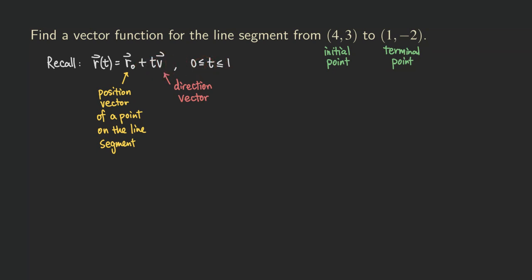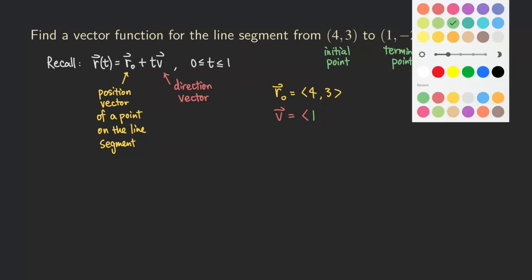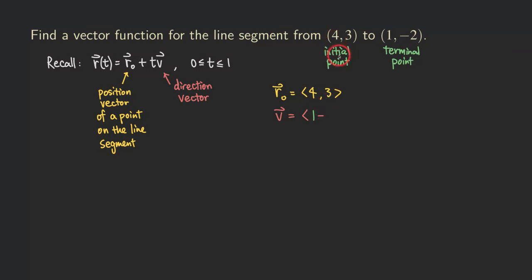Now let's start constructing this function. First, we write down the position vector by taking our initial point, which is (4, 3). Now for the direction vector, we take the terminal point. So we take the x-value of the terminal point, which is 1, and then subtract the x-value of the initial point, which is 4, giving us 1 minus 4.